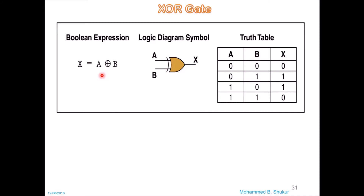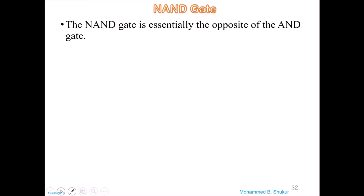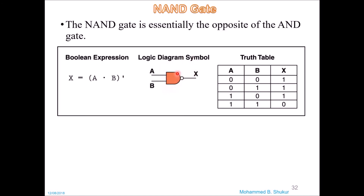Finally we have the NAND gate. The NAND gate is essentially the opposite of the AND gate. The logic diagram is the same as the AND gate except for a bubble, which means inverter. The Boolean expression is X equals A AND B with a bar — this bar reverses the output. Truth table: 0-0 is 1; 0-1 is 1; 1-0 is 1; and 1-1 is 0. The AND gate output was 0, 0, 0, 1 — so NAND is the opposite of AND.